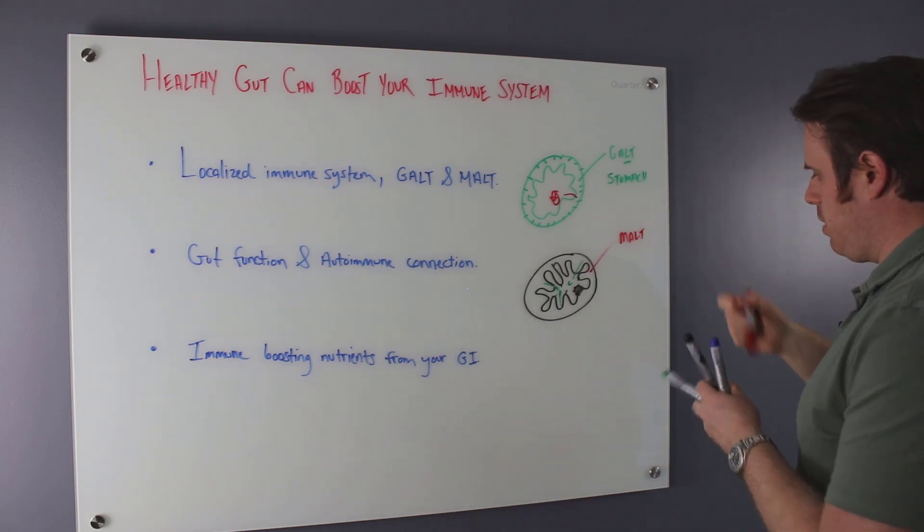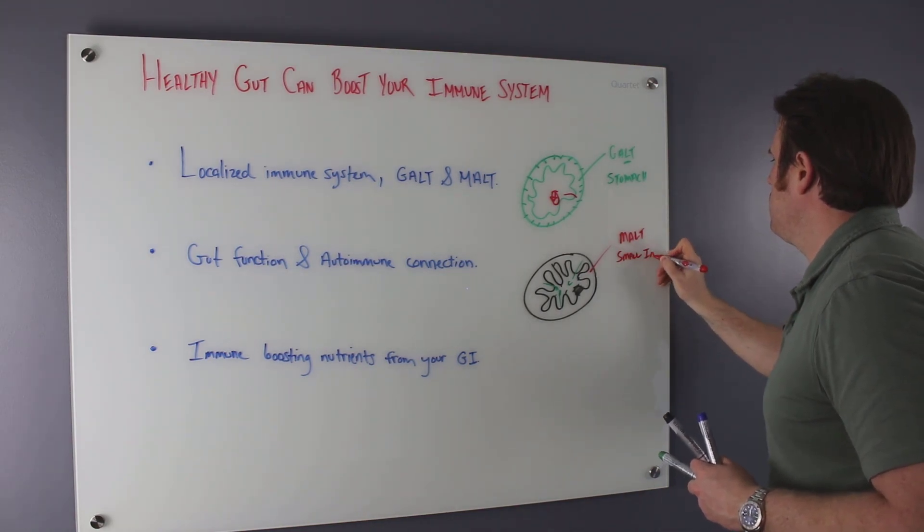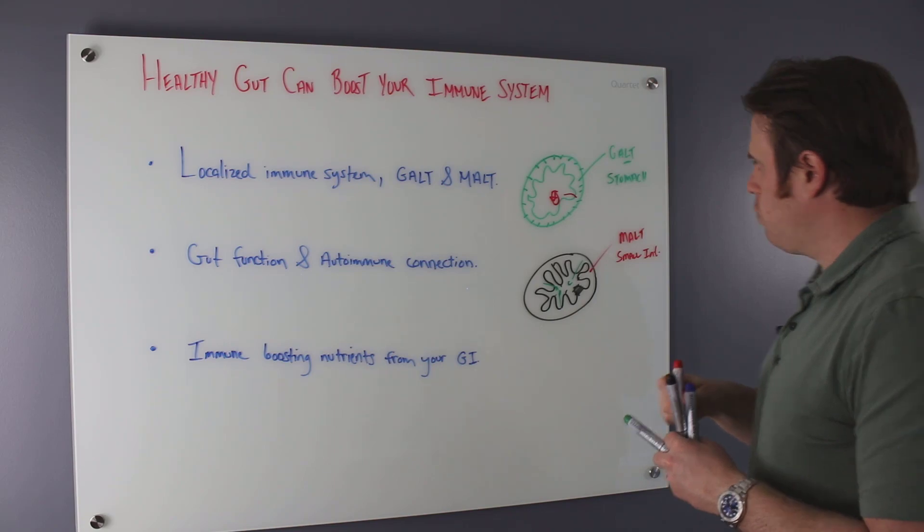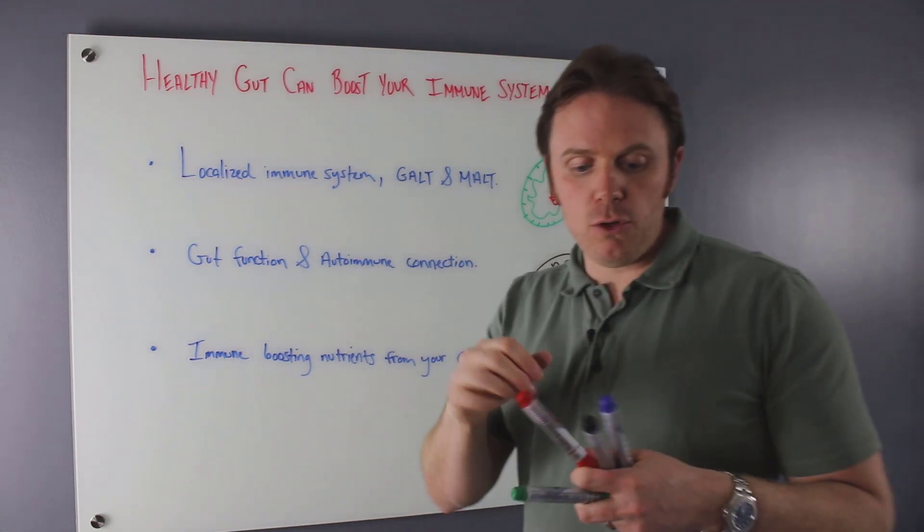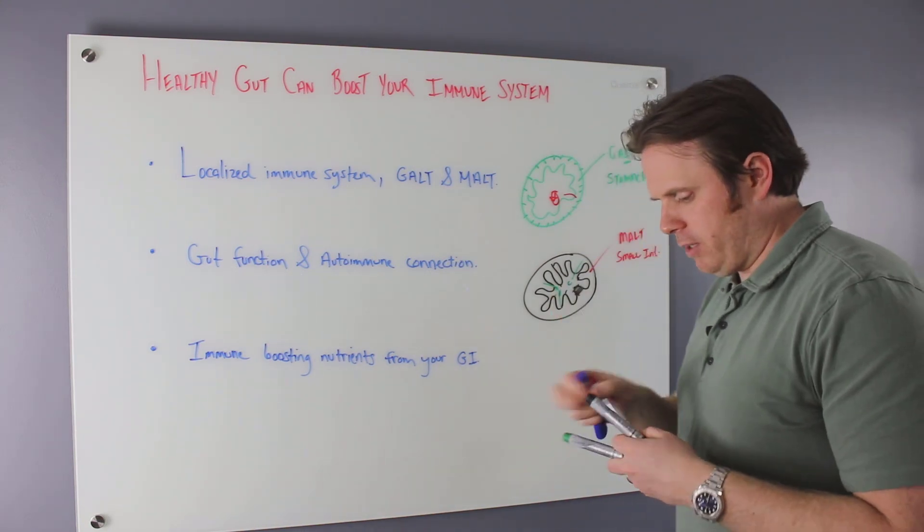And this is our stomach. Just so we know here, this is our stomach. And then we have the MALT. And this is going to be our small intestine. So really important. Now, also in the small intestine, we have other nutrients that are vital for our immune system. We have a couple of things that are being produced. We have different kinds of B vitamins.